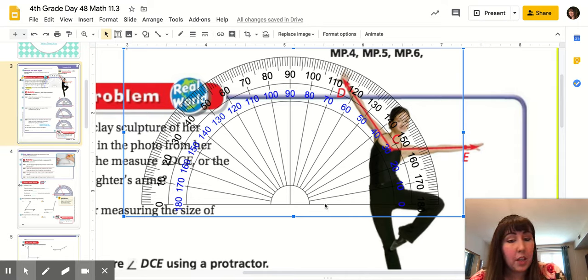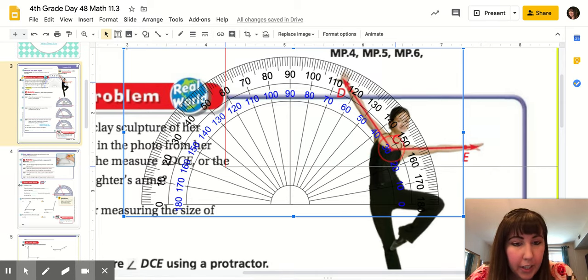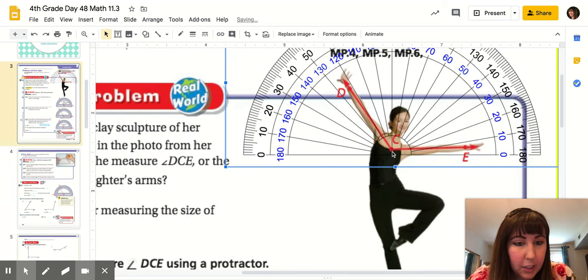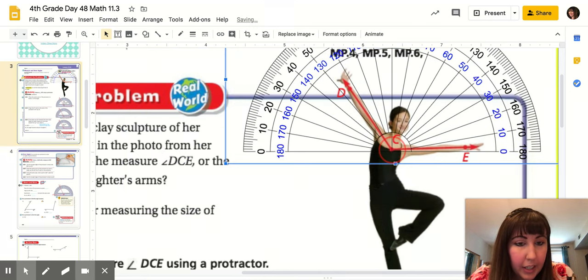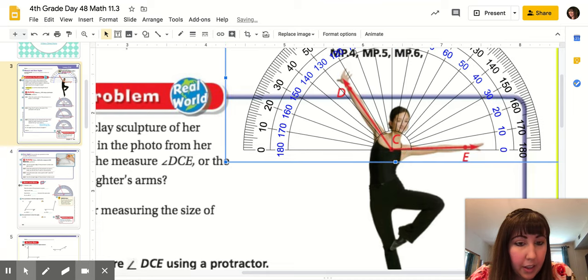And then you want the horizontal line at the bottom to line up with the horizontal line on the angle. So I'm going to drag this over here. And oh, it's not quite there. I've got to drag it up a little bit. Again, it's really important that you're very accurate here. So that looks pretty accurate.